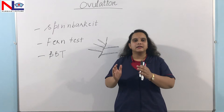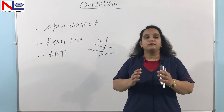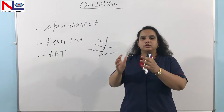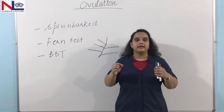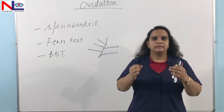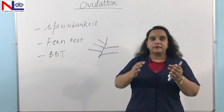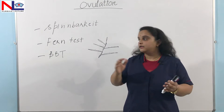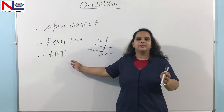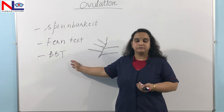We'll ask the woman that as soon as she gets up from the bed, she should not perform any activities or go anywhere — first check her body temperature. If her menstrual cycle is regular for about 28 days and she performs this test for around three to four months, she can easily calculate what her fertile period will be.